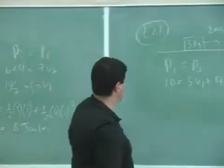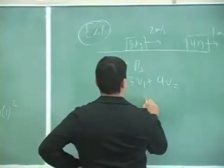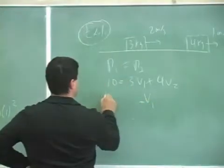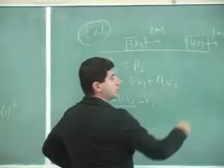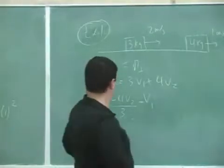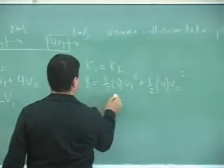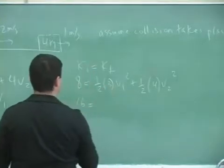Now we have a situation where we need to do some substitution—two equations, two unknowns. We're going to set v1 equal to 10 minus 4v2 over 3. Then we can substitute it into that v1. Multiply everything by 2 here.